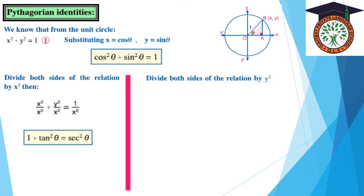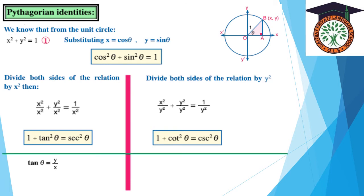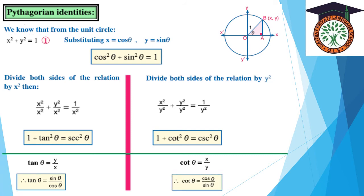Divide both sides of the relation by y²: x²/y² + y²/y² = 1/y², giving cot²z + 1 = csc²z. Also, tan z = y/x = sin z/cos z, and cot z = x/y = cos z/sin z.